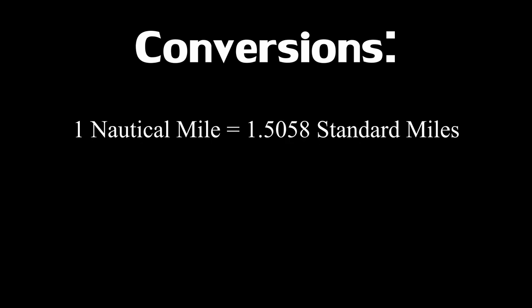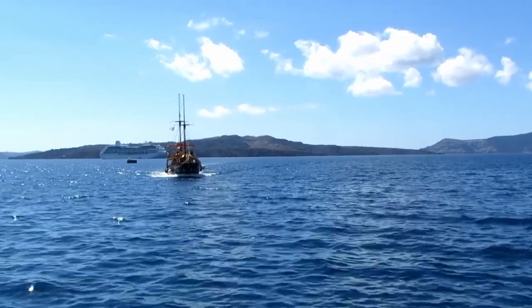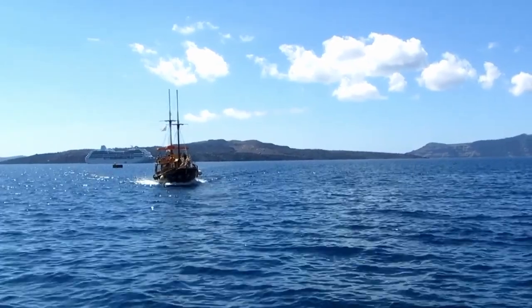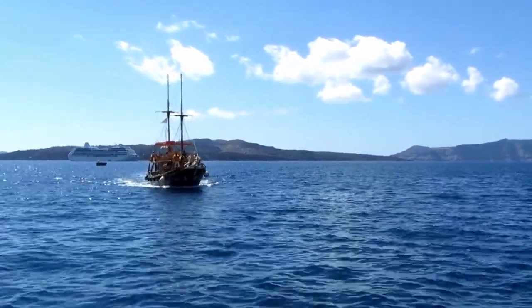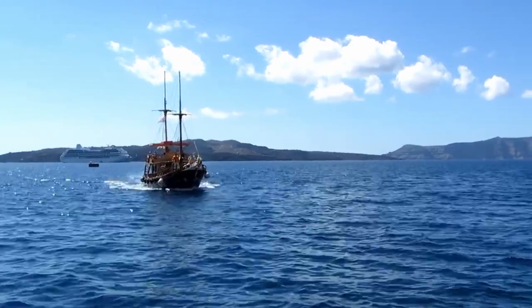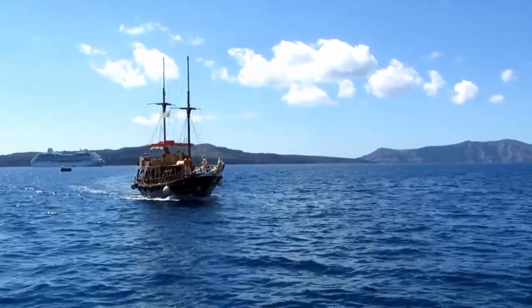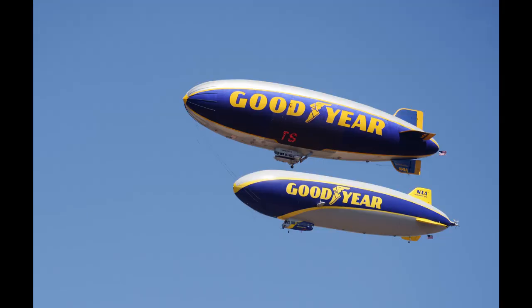One nautical mile is equal to 1.5058 standard miles, meaning a knot is equal to 1.15 miles per hour. For some time the exact distance of a nautical mile was disputed across the world, but in 1929 it was standardized that a nautical mile is equal to 6,076 feet. The United States adopted the standardization, and thus the knot was a speed unit for all vessels ranging from submarines to blimps.